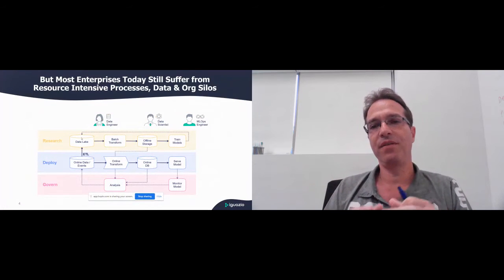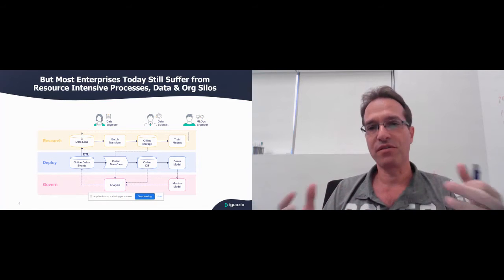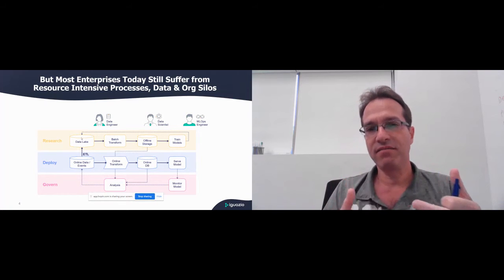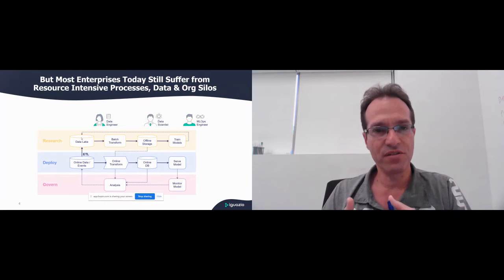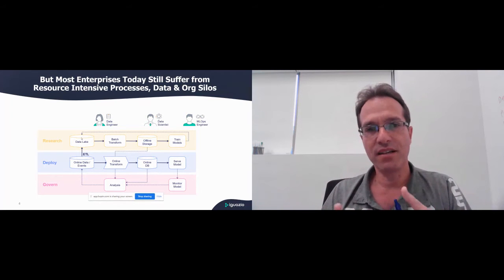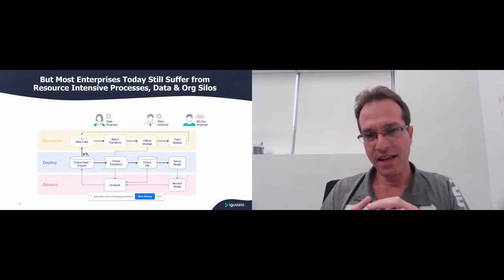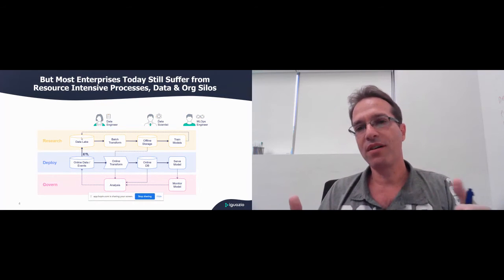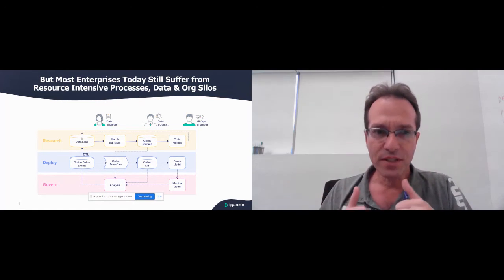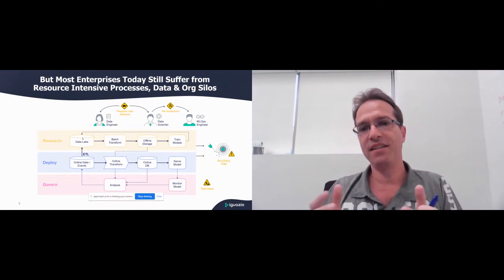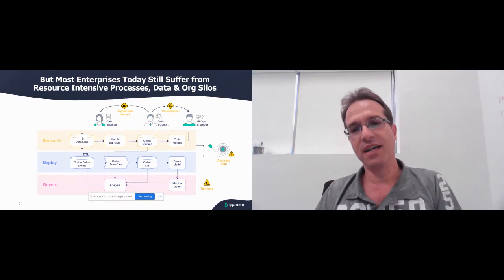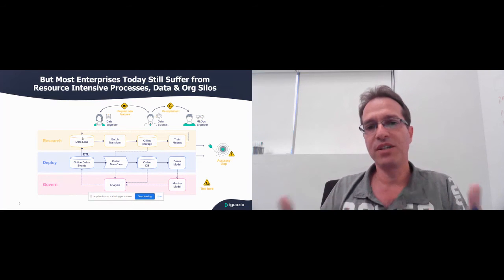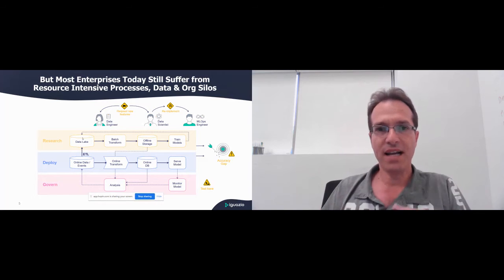On top of that, in the typical flow, the data scientist is in the middle. They need to get data, sometimes requiring data engineers to help them pull from data lakes and various sources. They create features, train the model, and once it's ready they need to take it to production. How do you take a piece of code that works in the lab and migrate it to production? In many cases, that requires migration of data and pipelines, so the data scientist needs to go back to the data engineers.